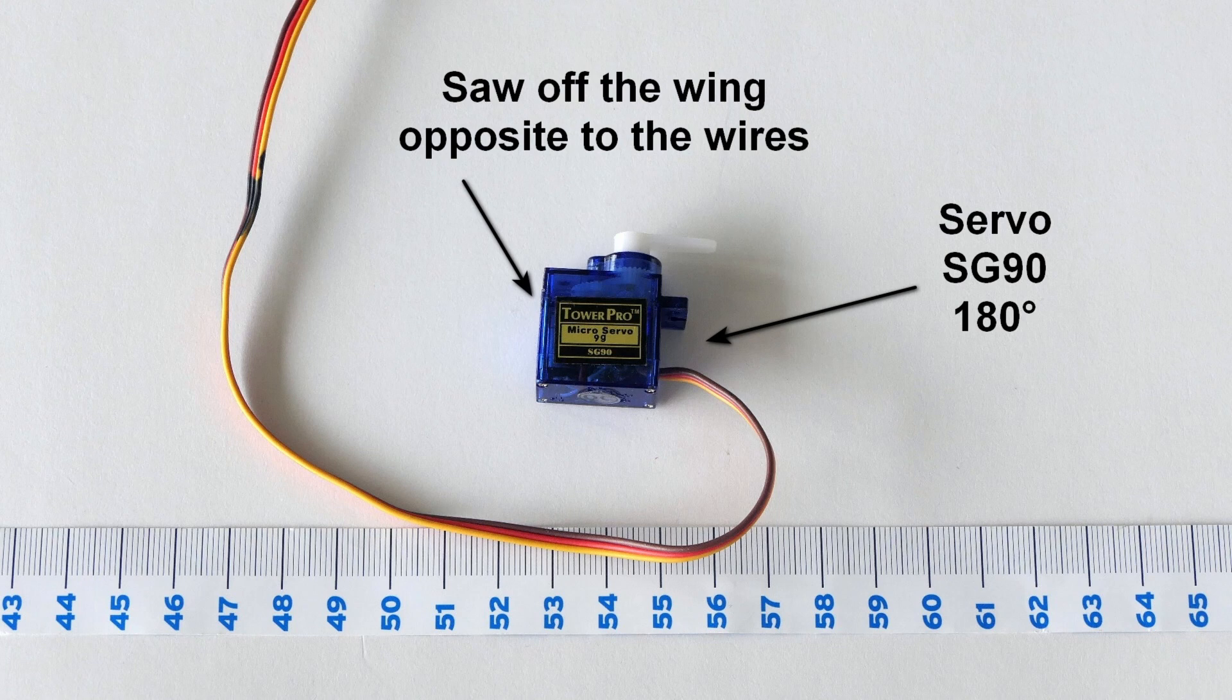And then of course we have the important player, the servo motor. These are also very cheap. I always buy them at AliExpress and they are about 2 euros or sometimes a bit more or a bit less. It's an SG90.